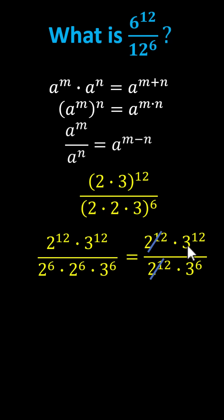Because we're dividing and the bases are the same, we subtract the exponents. Simplifying, we have 3 to the power of the difference of 12 and 6, which equals 3 to the power of 6.